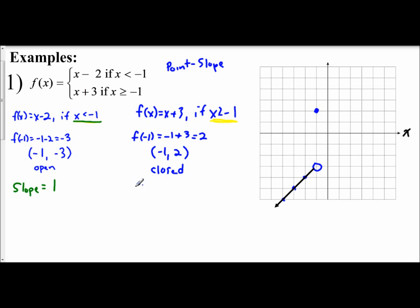Now again, we look at the slope of our function. f(x) equals x plus 3, so our slope is also 1. The boundary tells us x must be greater than or equal to negative 1, so our slope needs to take us in that direction — to the right. I apply my slope of 1 going up 1, right 1, plotting points, up 1, right 1, and so on. Then I take my line at the starting point and draw it through the rest of the points.